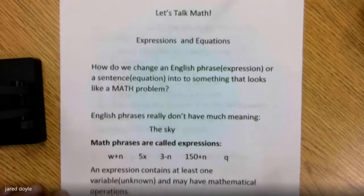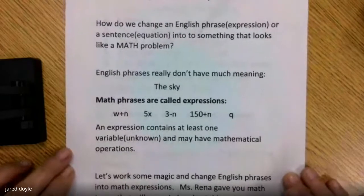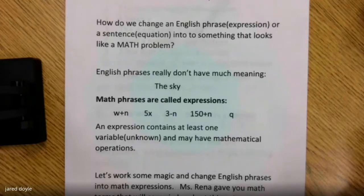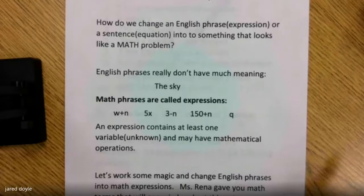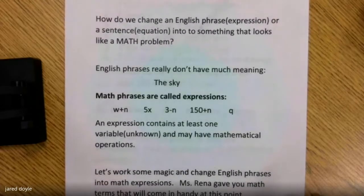English phrases really don't have much meaning. Like if I say 'the sky,' what do you know about the sky? Nothing. Math phrases are a little like that too — there's no end to it, it doesn't mean anything. Here are some examples of what a math phrase looks like: W plus N. Unless I give you a value for W and N, you can't do anything with it. 5X. 3 minus N. 150 plus N. Q. These are phrases.